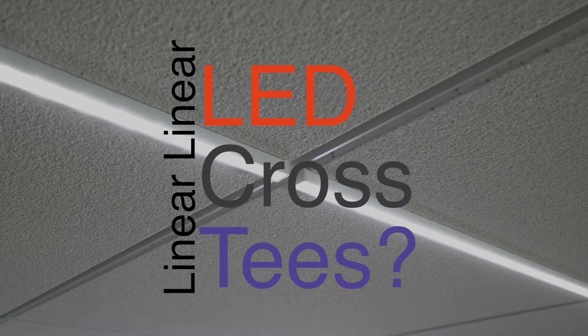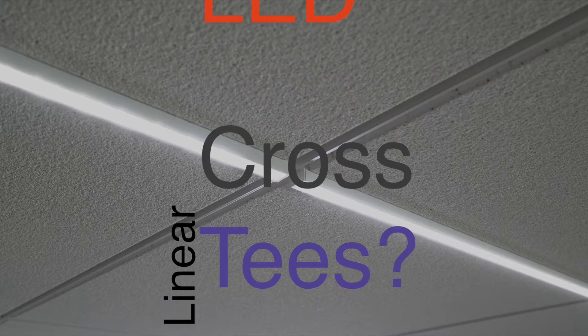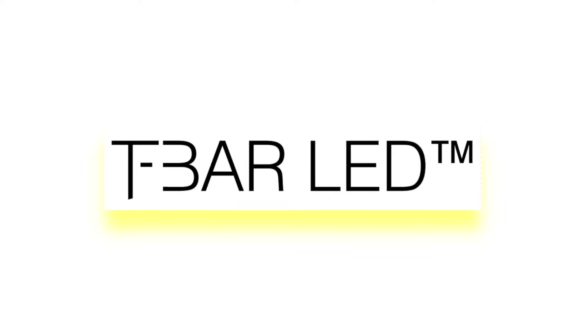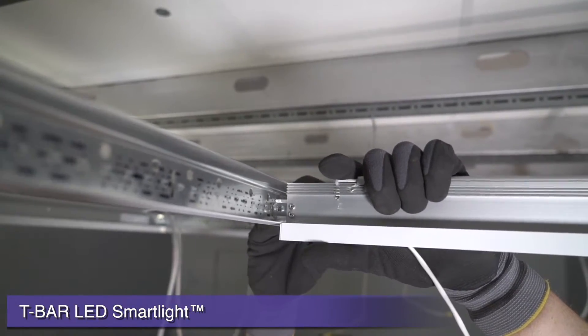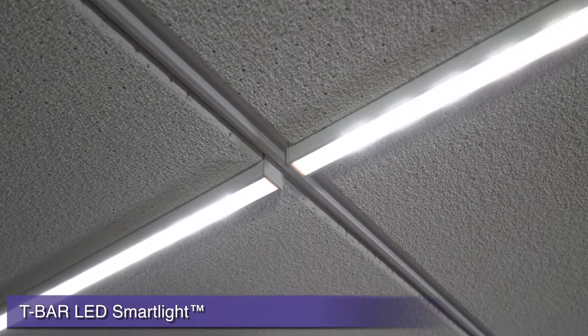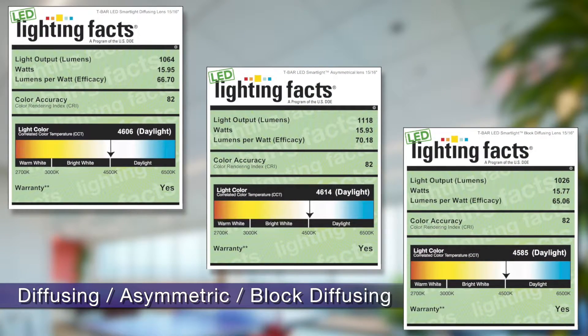We all know lighting is getting narrower, but did you know it can be as narrow as a ceiling cross T? T-Bar LED smart lights are available in 15/16th inch and 9/16th inch widths and deliver the bright lumens you need to evenly light your spaces. Four diffusion options are available so you get the even lighting spread that you specify.